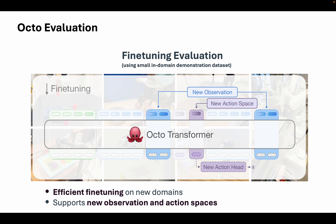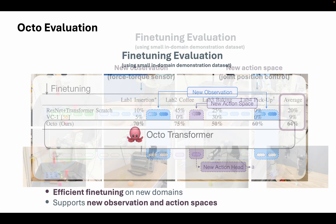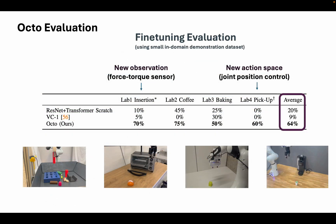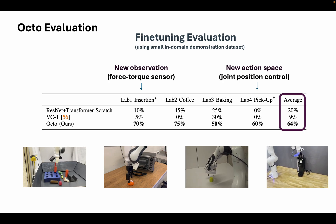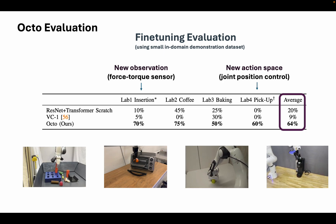The more typical way to use the Octo model is to fine-tune it on your own robot using a small demonstration dataset. It's easy to add new sensors, cameras, and action spaces — just swap out the input and output adapters and go. In our own experiments, we found that Octo fine-tunes relatively well, outperforming policies that were trained from scratch and those that used pre-trained visual features.